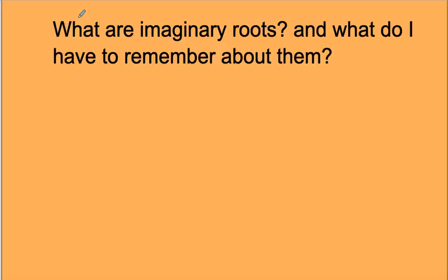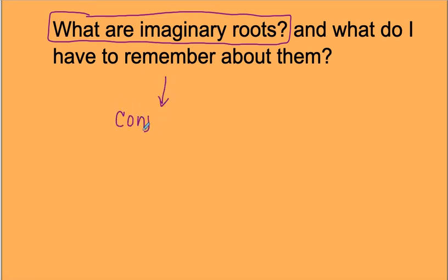You also learned about polynomials, imaginary roots. Imaginary roots are going to be when you have i in your root. But what you have to remember about them is that they come in conjugate pairs. Actually, all irrational roots do. So if I tell you that 2 plus i is a root, then its conjugate 2 minus i is also a root. Because they come in pairs, you have to think about that when you're looking at the degree of a polynomial.